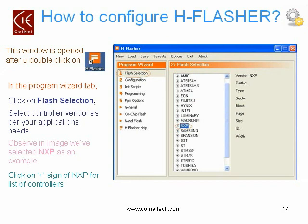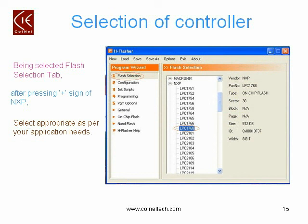To open H Flasher, double-click on the H Flasher icon shown in the slide. When the H Flasher window opens, it shows two window panes: on the left is the Program Wizard and on the right is the Flash Selection. The Program Wizard shows different options. The first option to select is Flash Selection; clicking it on the right pane shows different controller options. For our example, we have chosen NXP as the controller vendor. Click the plus sign beside NXP to see the list of controllers, then select LPC1768. You can select your controller as per your application needs.